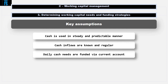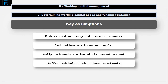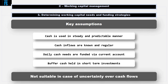The third assumption is that daily cash needs are funded via a current account and buffer cash held in short-term investments. These assumptions are more likely to occur and something most businesses would strive to achieve. However, this is often not the reality, as day-to-day expenditure could be funded by short-term loans. In reality, this model is not suitable where there is uncertainty over cash flows.